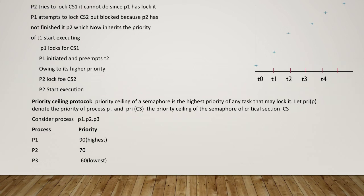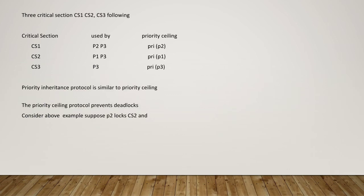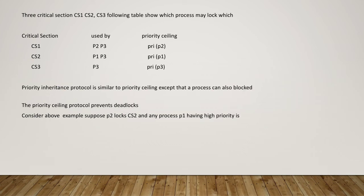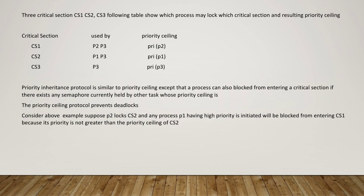There are three critical sections CS1, CS2, CS3. The table shows which process may lock which critical section and the resulting priority ceiling. Critical sections CS1, CS2, CS3 are used by P2, P3, and priority ceiling is PRI of P2, PRI of P2, and PRI of P3 respectively.